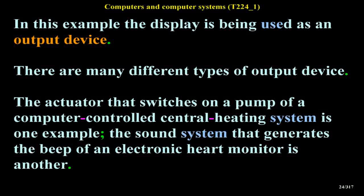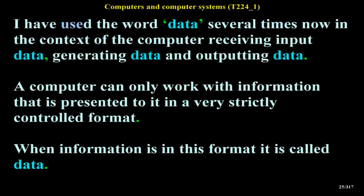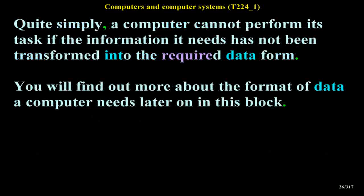There are many different types of output device. The actuator that switches on a pump in a computer-controlled central heating system is one example; the sound system that generates the beep of an electronic heart monitor is another. A computer can only work with information presented to it in a very strictly controlled format — when information is in this format it is called data. A computer cannot perform its task if the information it needs has not been transformed into the required data form.